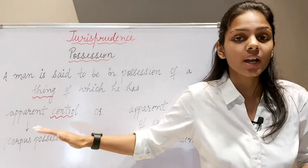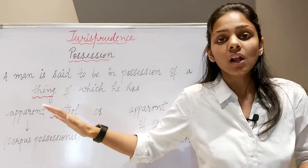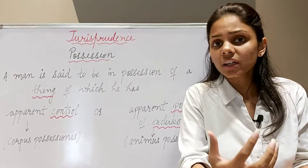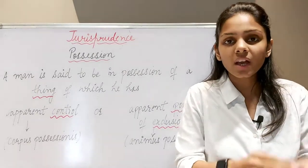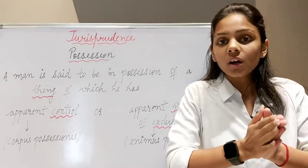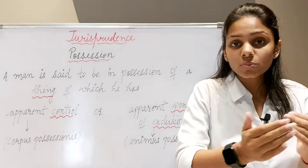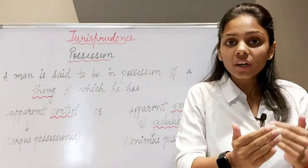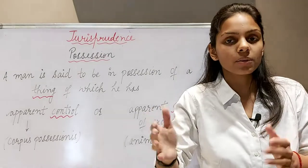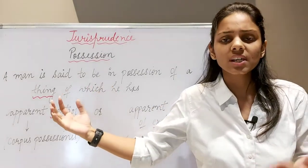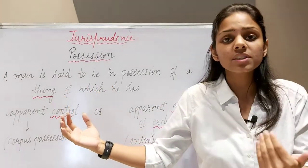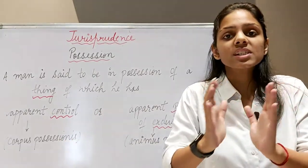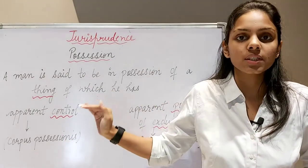Apparent control hota hai. But that control must be physical. Now in order to ascertain kya mere apparent control hai kisi cheez pe ya nahi, us ka ek test hai. There must be some relationship — physical relation or contact of a man with an object. Us object ke saath, us cheez ke saath ek man ka physical contact, physical relation hona zaroori hai. That man must stand in some physical relationship with this thing.